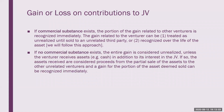If no commercial substance exists, then the entire amount of the gain is considered to be unrealized unless the venturer receives additional assets — for example, cash or some other asset — in addition to their interest in the joint venture. If additional assets are received, then those assets are considered to be proceeds from the partial sale of the asset with the other unrelated venturers.